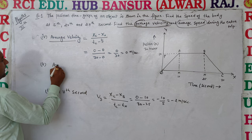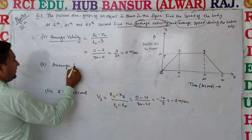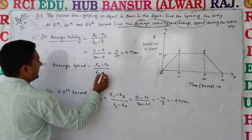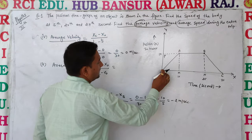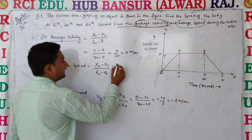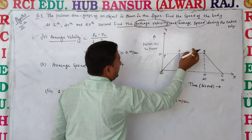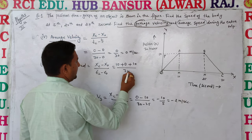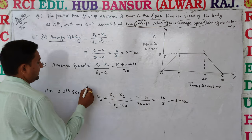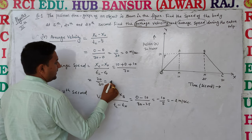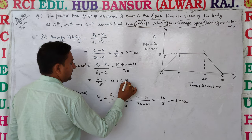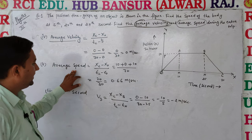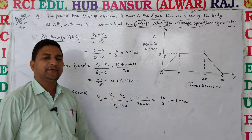For average speed, we use total distance divided by total time. The distance for O to A is 10 meters, A to B is 0 meters, and B to C is 10 meters. Total distance = 10 + 0 + 10 = 20 meters, and total time = 30 seconds. So average speed = 20 / 30 = 0.66 meter per second. The complete average speed for the entire trip is 0.66 m/s.